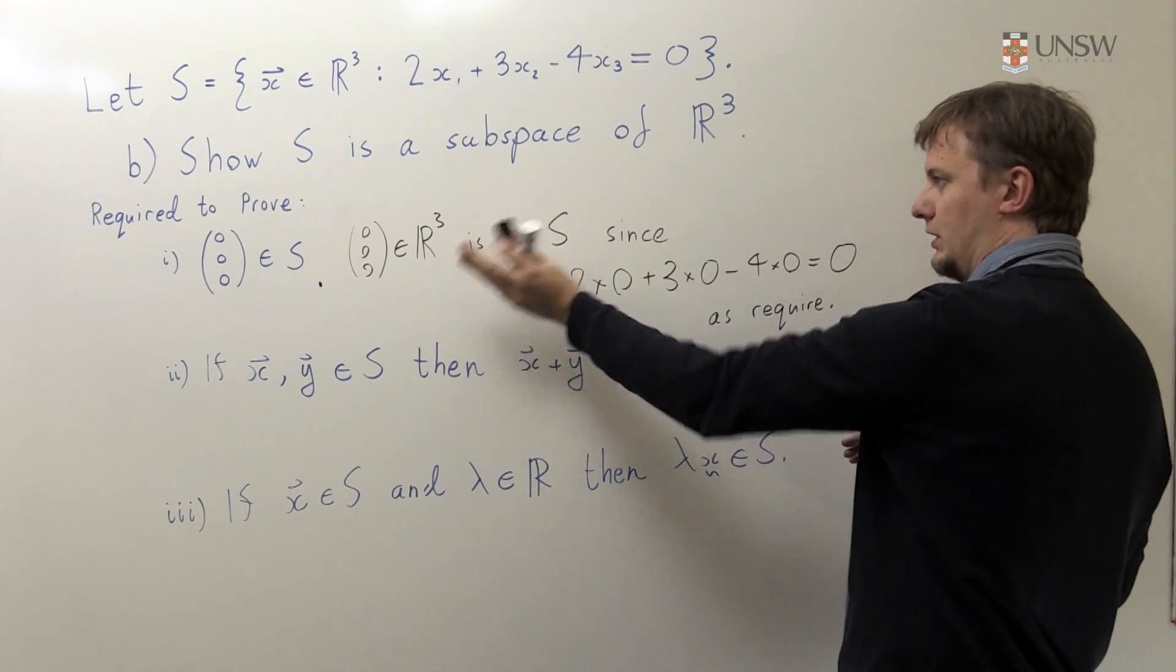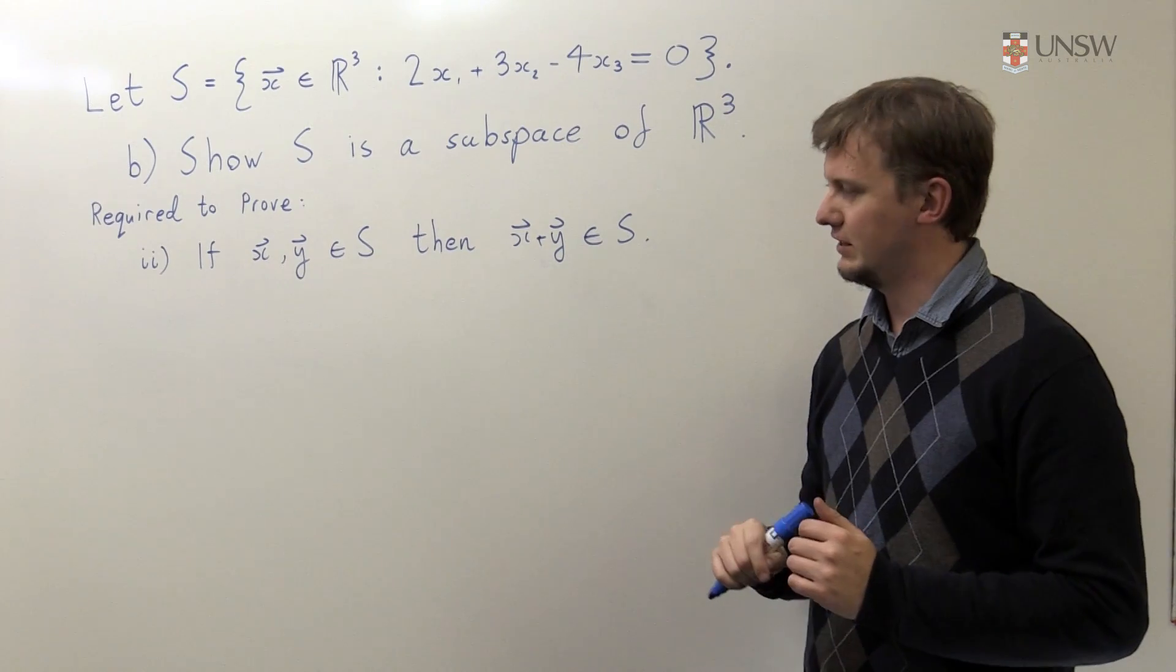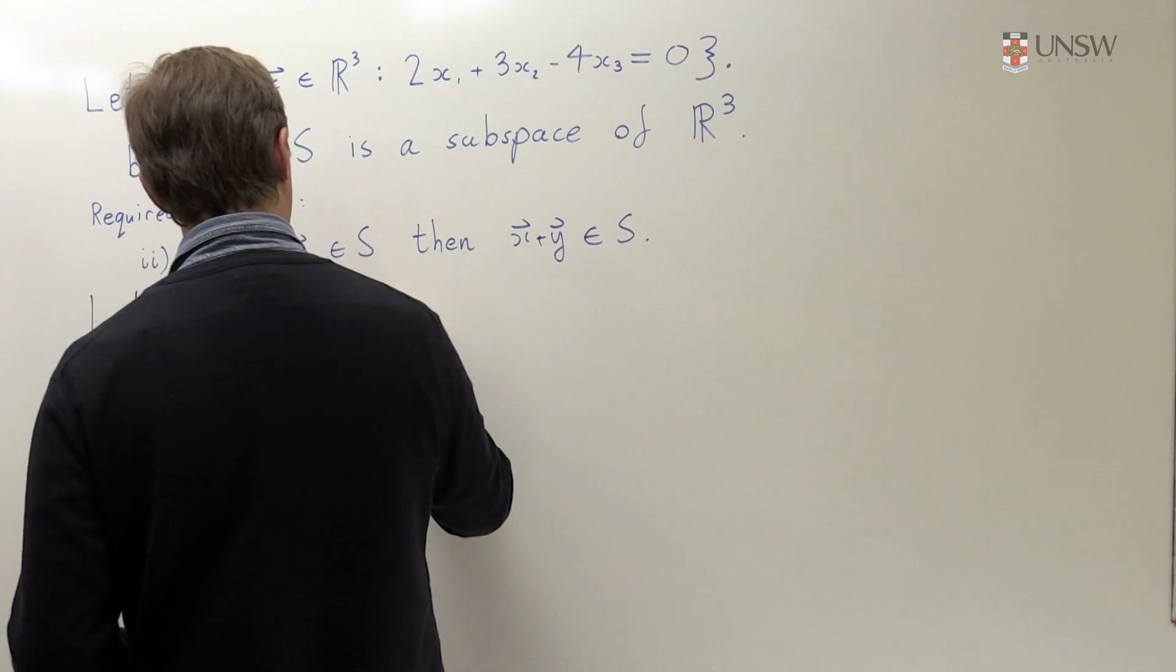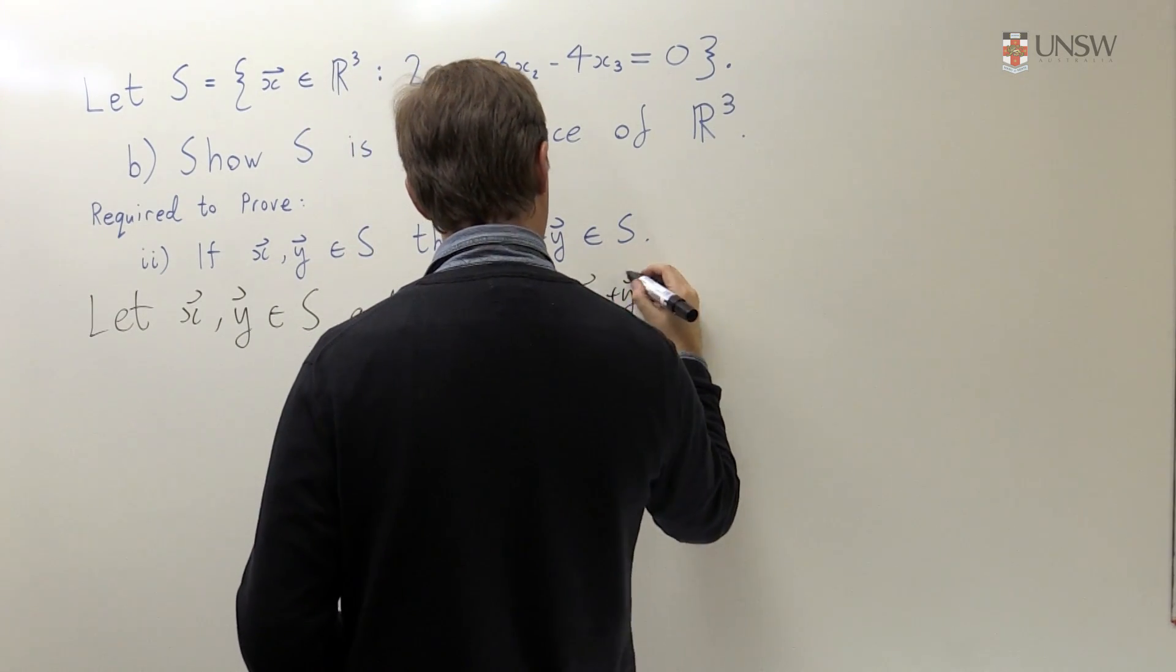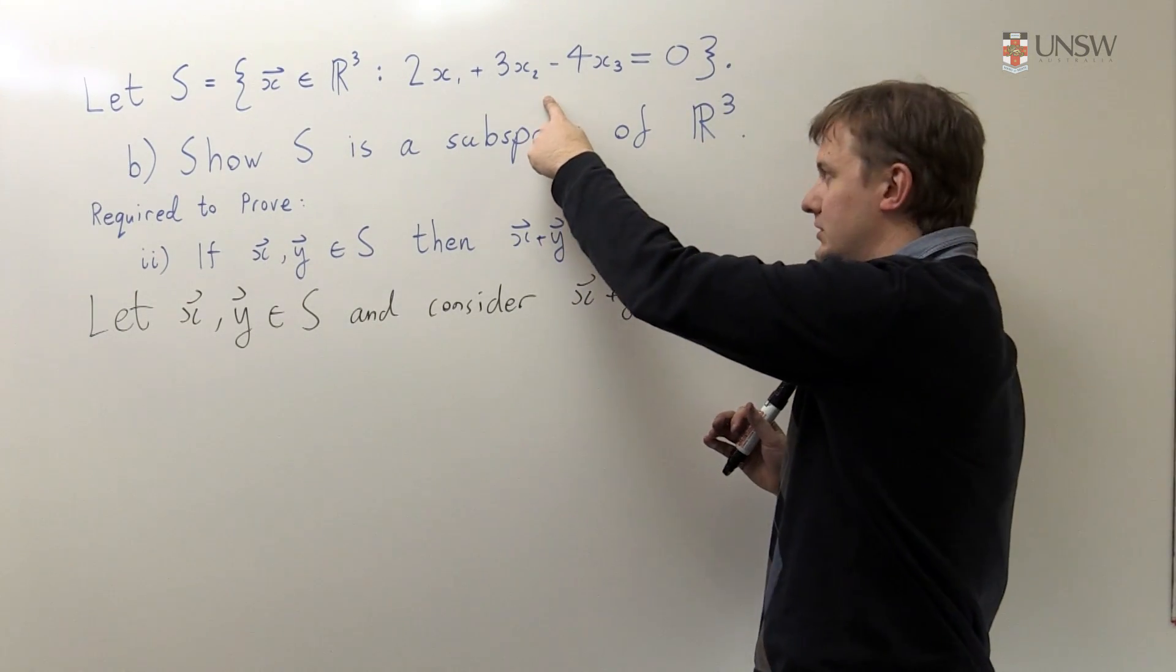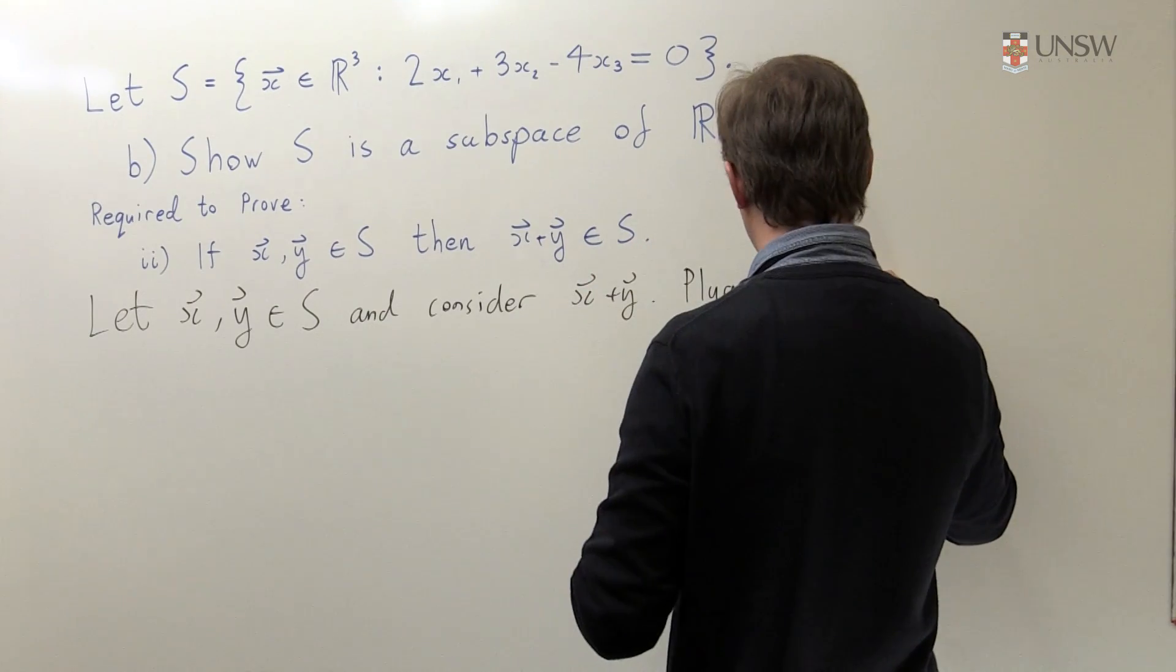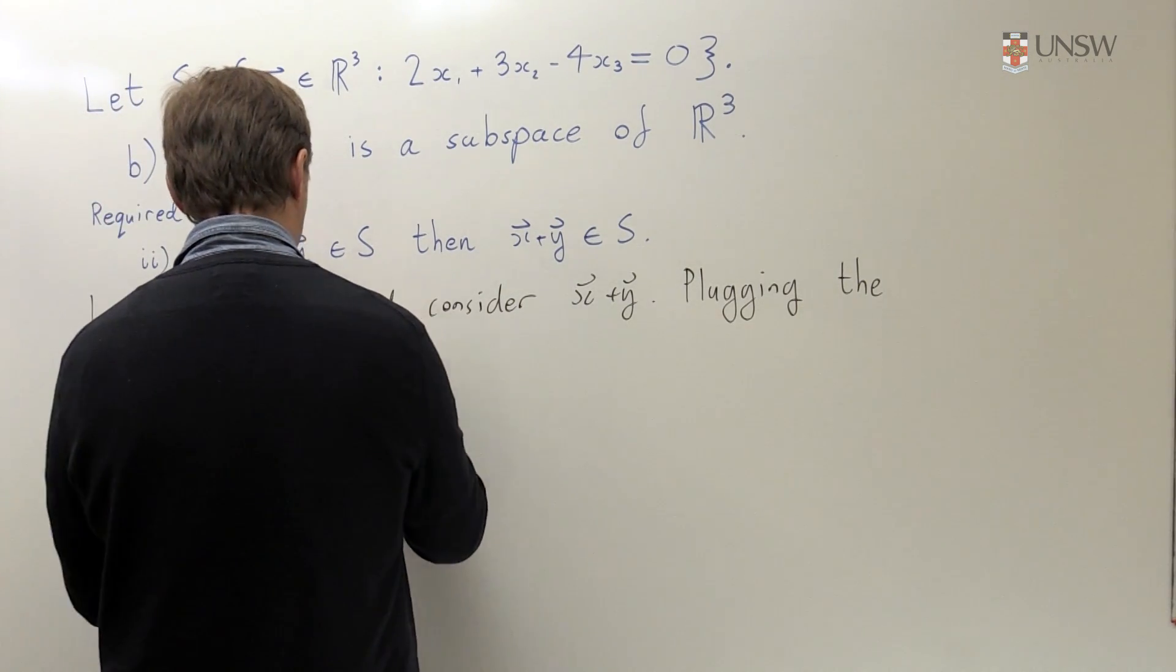So yes, I can confidently tell you that that vector is in S. So let's show that second property. Let's show that if we take two elements of S, then their sum is also in S. Let's take X and Y to be elements of S, and let's consider what happens when we look at this sum X plus Y. Well, I want to know if this vector lies in this set, and it's only going to lie in this set if it satisfies this condition.